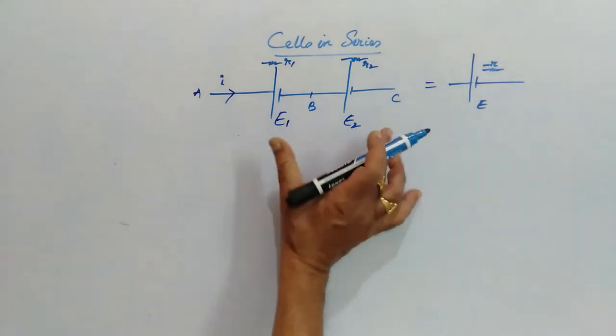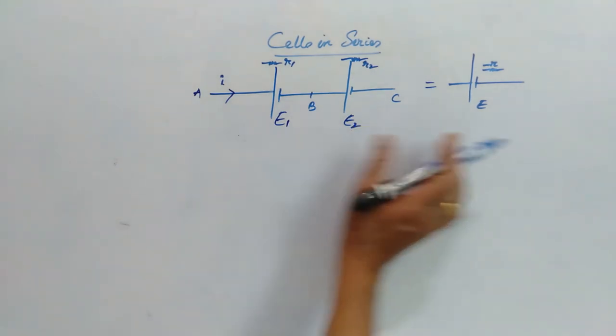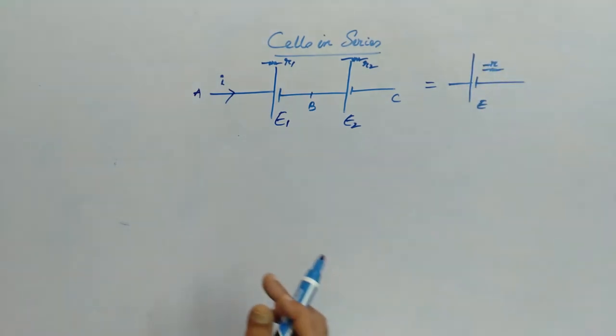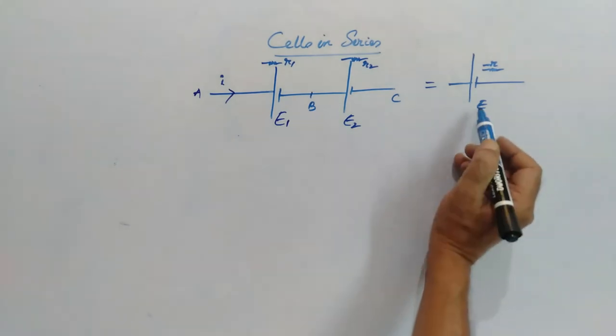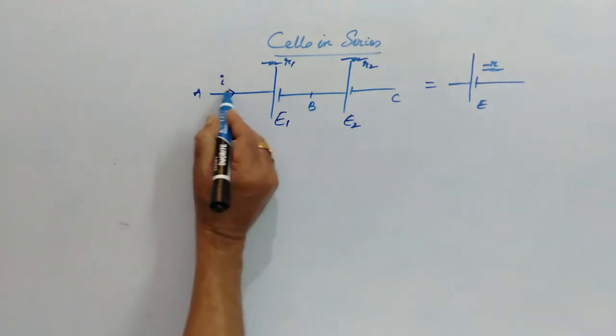Now if you want to write an equivalent to this arrangement with effective EMF E and resistance R, our aim is to find the values of E and R. Now if the current I is passing from A,